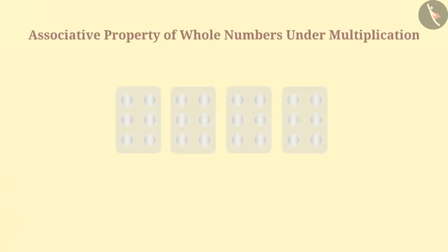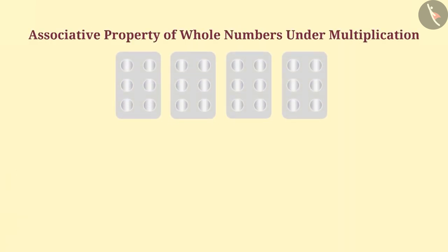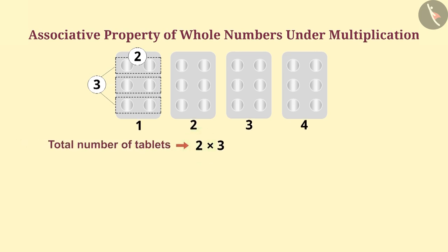Now let's talk about multiplication. Look at this picture. Will you be able to tell the number of tablets by operation of multiplication? There are 2 tablets in each row. Therefore, 3 rows will have 2 multiplied by 3 tablets. And since there are 4 packets, the total number of tablets is 2 multiplied by 3 multiplied by 4.